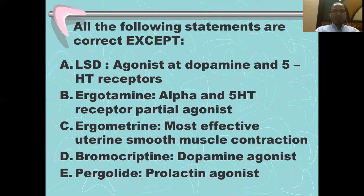Ergotamine is an alpha and 5-HT receptor partial agonist — this is also correct, unlike ergometrine which is more often a full agonist at these receptors. Option C: ergometrine is the most effective in uterine smooth muscle contraction — this statement is also correct. Statement B: bromocriptine is a dopamine agonist — also correct. And then the last item: pergolide is a prolactin agonist — this statement is not correct. Pergolide is a dopamine agonist, and these dopamine agonists are prolactin antagonists.